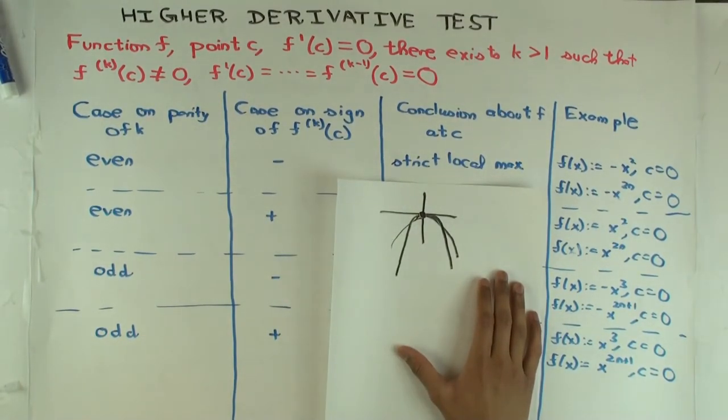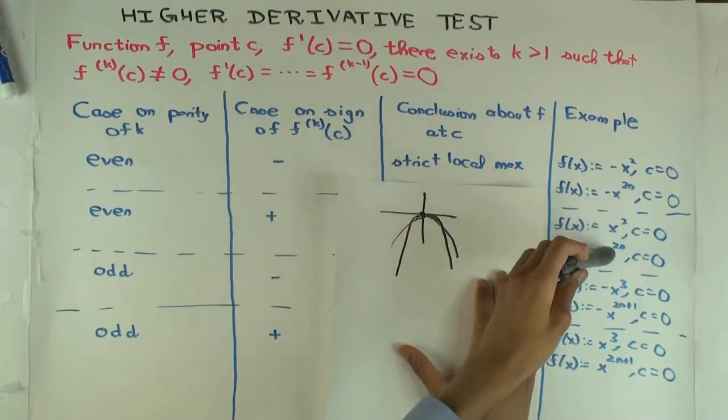What if you have even and positive? So what do I mean by even and positive here? You have to differentiate an even number of times to reach a non-zero number. And that number is positive, non-zero value at the point. And that number is positive. So x squared or x to the 2n.